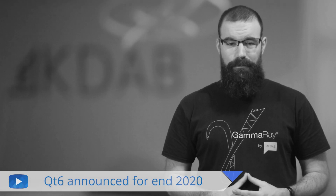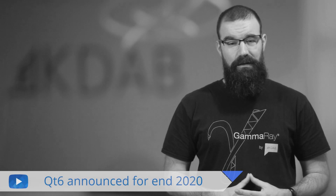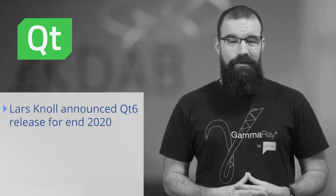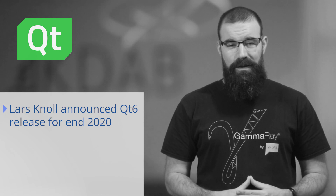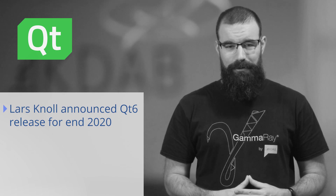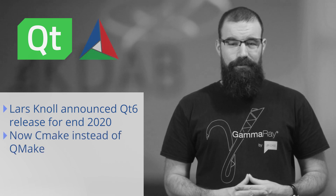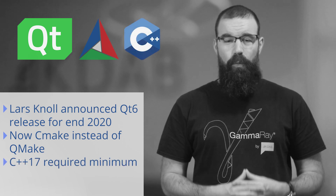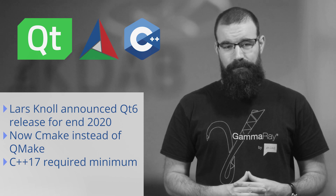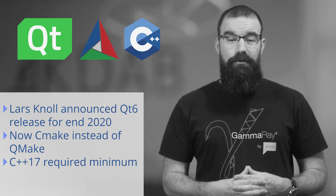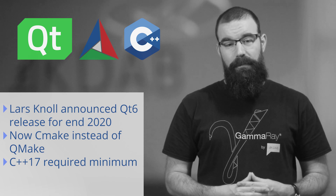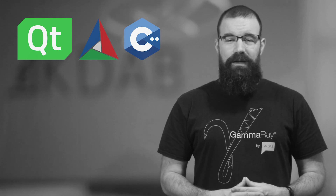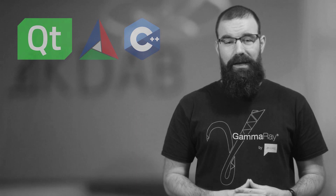During the recent Qt World Summit in Berlin, Qt Chief Maintainer Lars Knoll announced Qt 6 for the end of 2020. Though it was emphasized to keep Qt 6 compatible with previous versions, there are going to be some changes and new requirements. Most importantly, the build system for Qt 6 will be CMake instead of Qmake, and C++17 will be required as a minimum standard. This means that if you are planning to update to Qt 6 at some point, you might want to start familiarizing yourself with these standards. We will provide you with more technical details on Qt 6 in our coming KDAB News editions.